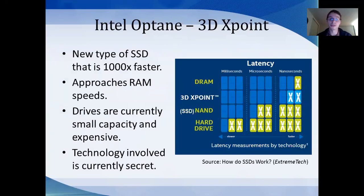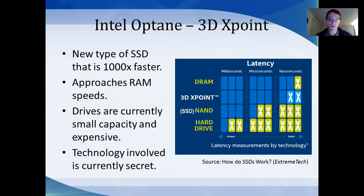Another thing I briefly wanted to mention is a new type of hard drive coming out called Intel Optane, which uses 3D X-Point technology. This technology is way faster than current SSDs, and that speed will be fully unlocked once we have the proper terminals for those types of hard drives. It's getting pretty close to RAM speeds. However, it's not commercially available in large usable quantities yet — only about 8 to 16 gigabytes. The technology is secret right now, so Intel isn't really telling people how they did this, and we can't go into much analysis on it.